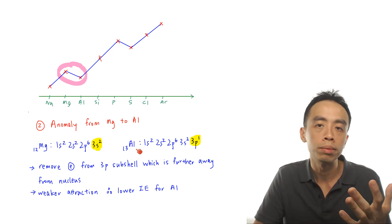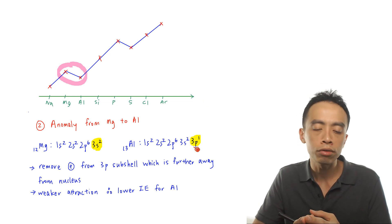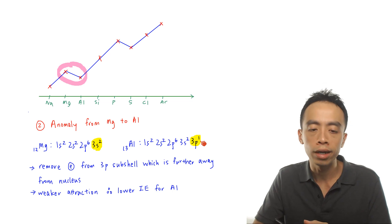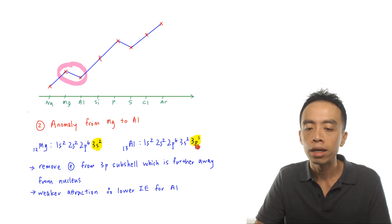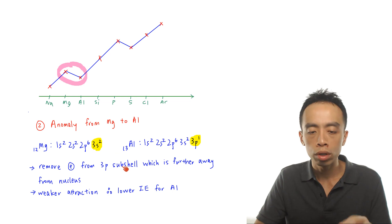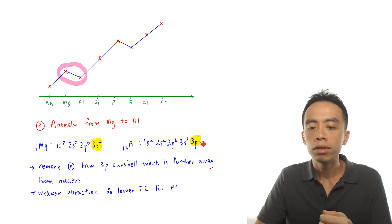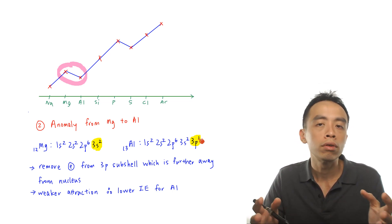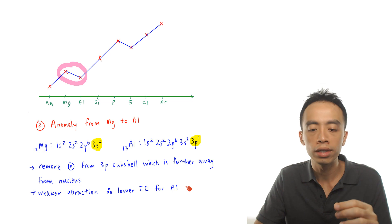For aluminum, which is element 13 with 13 electrons, the configuration is 1s2, 2s2, 2p6, 3s2, 3p1. So when removing an electron from aluminum, I'm removing it from the 3p subshell. The difference is that the 3p subshell is further away from the nucleus, or has a higher energy level, compared to 3s. Since the electron is further from the nucleus, the attraction between the nucleus and that electron is weaker, so it is easier to remove and requires less energy — therefore aluminum has a lower ionization energy.